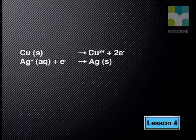From these observations you should deduce that copper from the copper wire has formed blue copper ions in the solution, and the silver ions in the solution have formed the silver deposit that makes the sparkling tree. We can represent the chemical change as two half reactions.